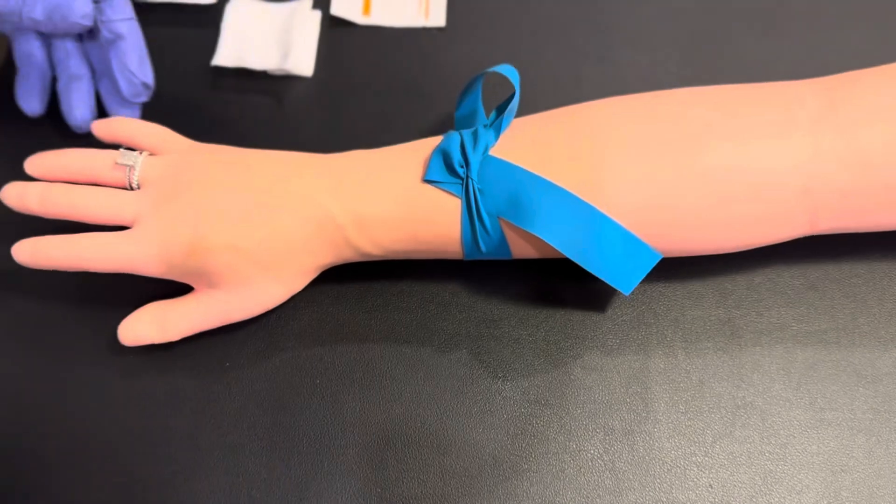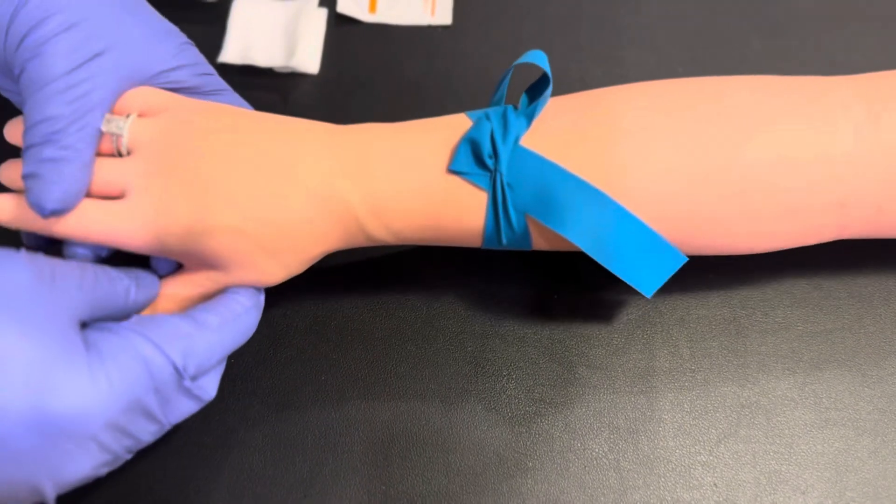First, apply the tourniquet three to four inches above the venipuncture site.